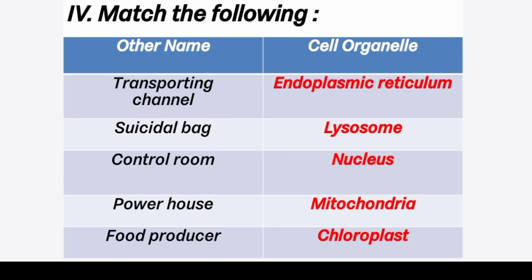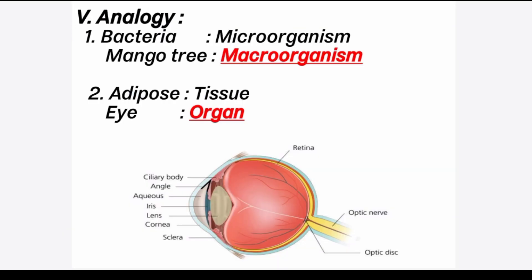Fourth section: match the following — cell organelles and their other names. Transporting channel — endoplasmic reticulum. Suicidal bag — lysosome (lysosome is also called the suicidal bag). Controlled room of cell — nucleus. Powerhouse of cell — mitochondria. Food producer — chloroplast.